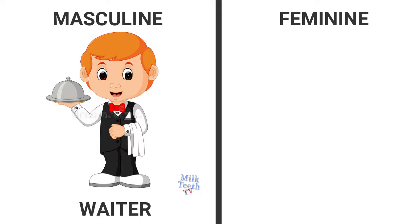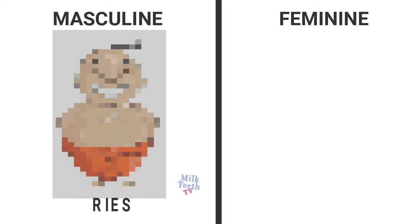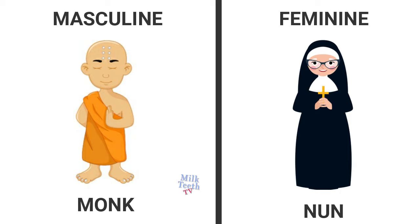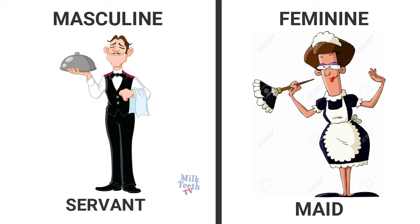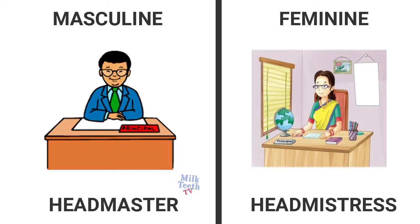Uncle — aunt. Nephew — niece. Waiter — waitress. Actor — actress. Priest — priestess. Monk — nun. Servant — maid. Sir — madam. Headmaster — headmistress.